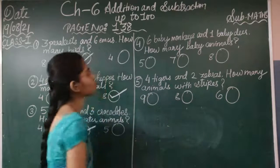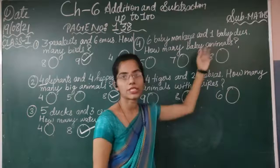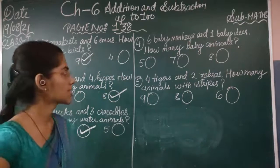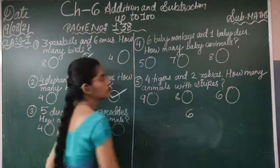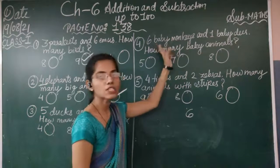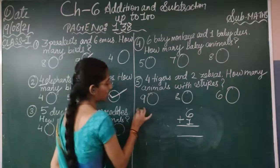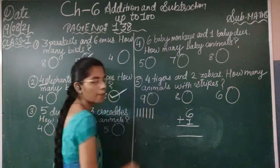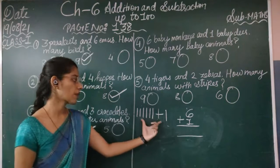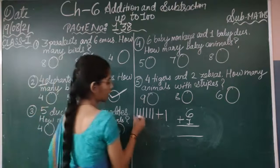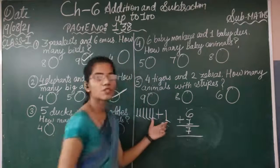Next is question number 4: 6 baby monkeys and 1 baby deer. How many baby animals? You have to count the total number of baby animals. Baby monkeys is 6, and baby deer is 1. Draw 6 lines: 1, 2, 3, 4, 5, 6, then 1 more line. Count all lines: 1, 2, 3, 4, 5, 6, 7. The total value is 7. It means 6 plus 1 is 7.